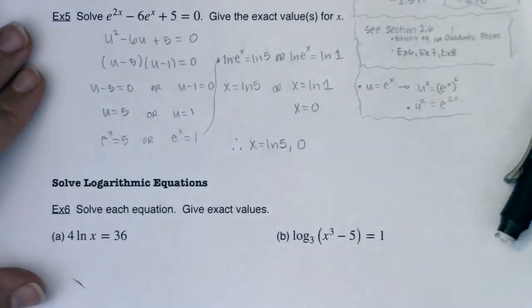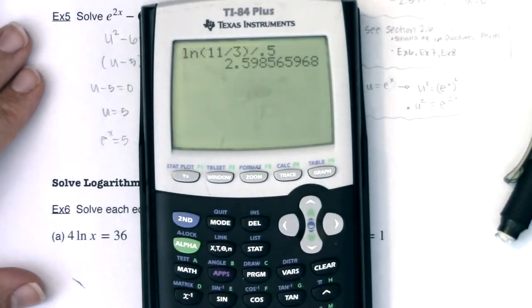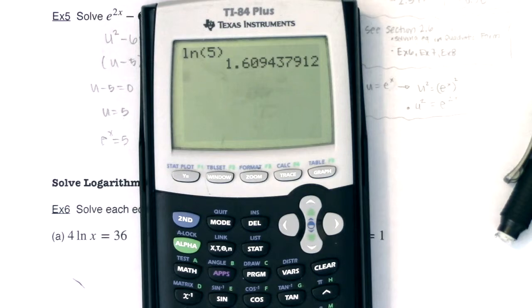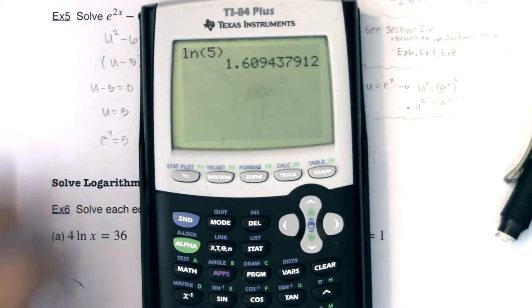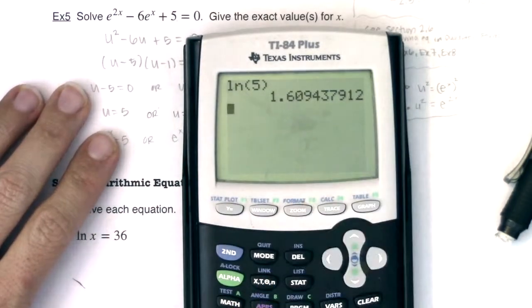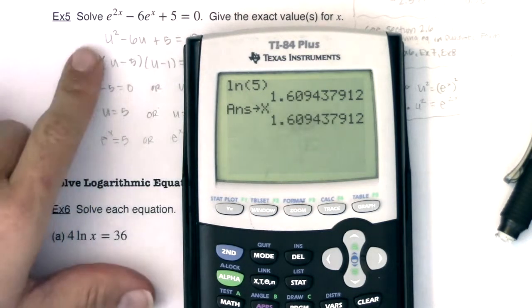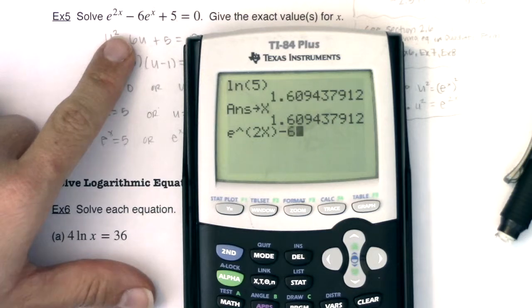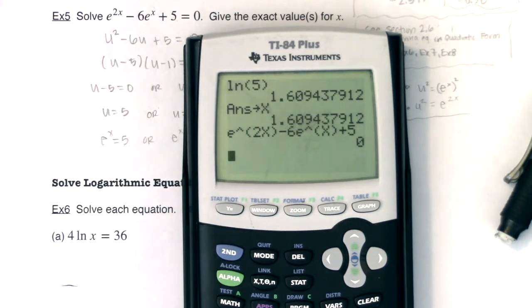So that means the two answers for my equation are the natural log of 5 and 0. And even though natural log of 5 might look funky, it's just a number. If I plug it into my calculator, it looks like it's about 1.6094. And if I were to store that in for x just so we could check it, I could do e to the 2x minus 6e to the x plus 5, and when I hit enter, it's equal to 0.